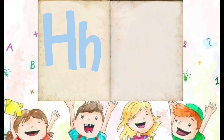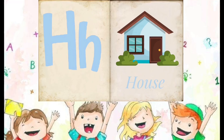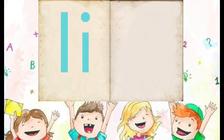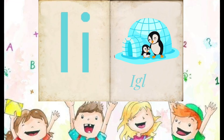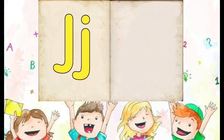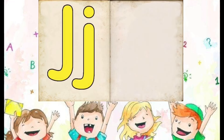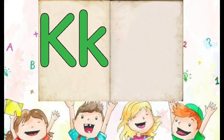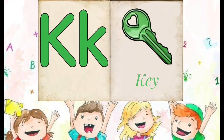H is for Owls, I is for Ikleb, J is for Juice, K is for Cape.